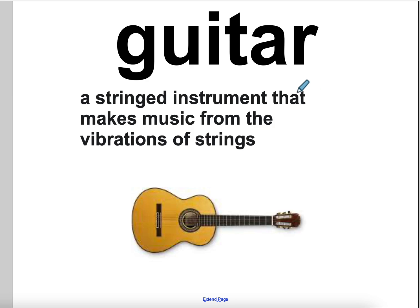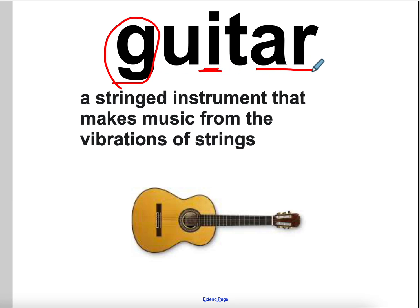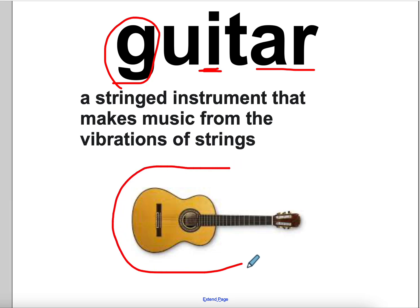The next word is guitar. Guitar. I see it starts with a G — G, T-A-R. A guitar is a stringed instrument that makes music from the vibrations of strings. If you've seen a performance, you'll see that some people use guitars.